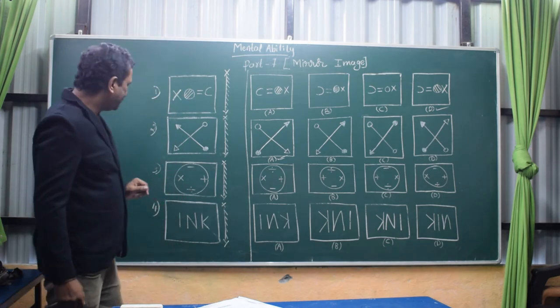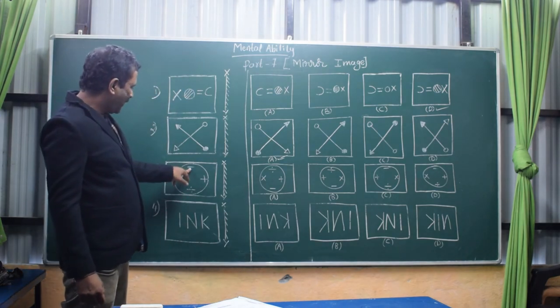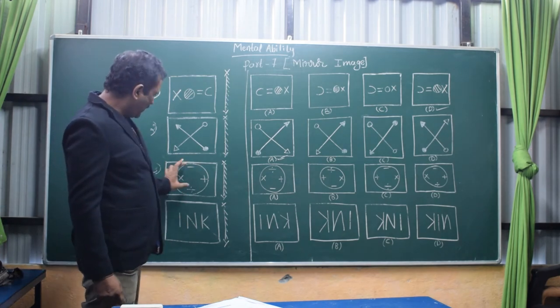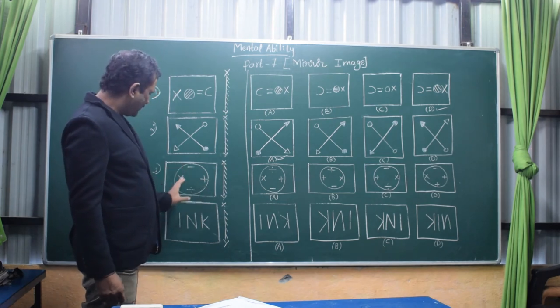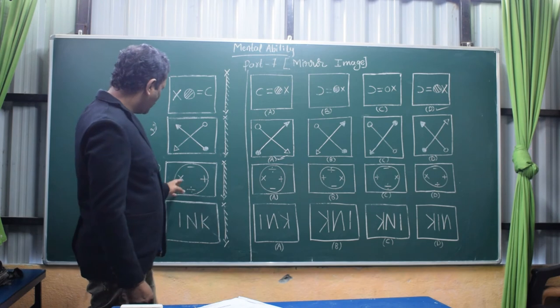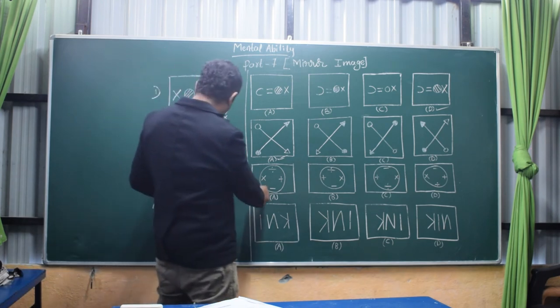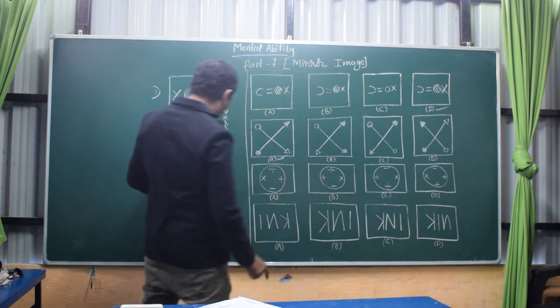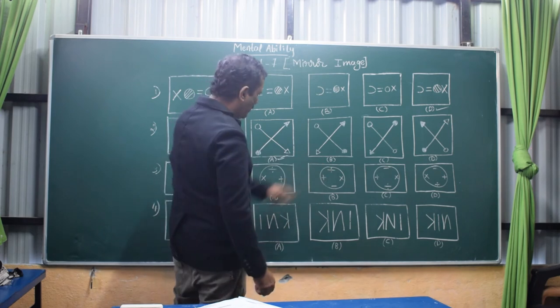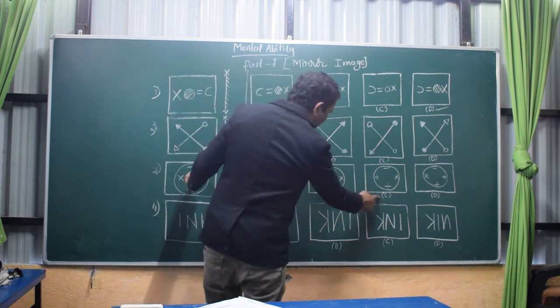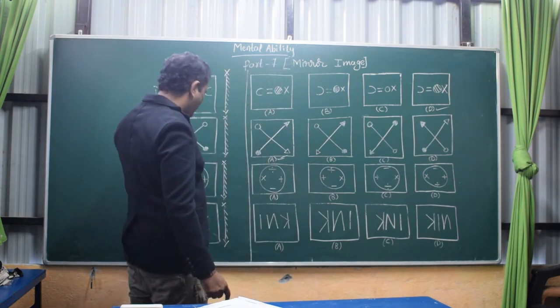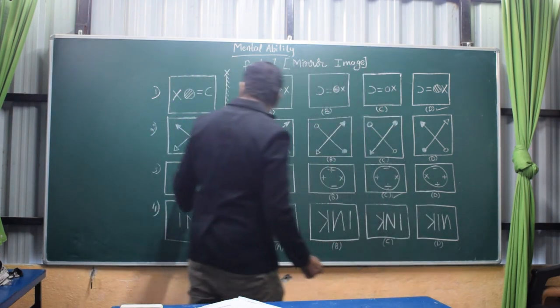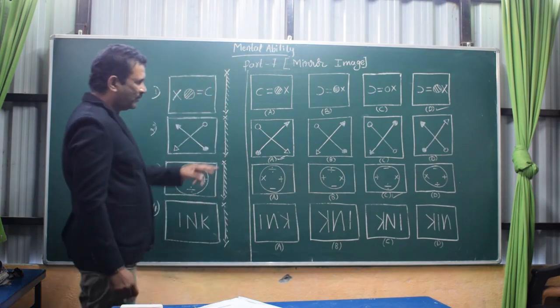Come to question number three. Here one circle is there with minus, plus, divided by, and multiplication symbols. If you see the mirror, these two cannot change. Only plus and multiplication will be inverted. In this option, the multiplication is in the same position, this is not the answer. Here plus and multiplication are inverted, but divided by is gone to top side, this is also not correct. Here in C, minus and divided by symbols are in same position, plus and multiplication inverted, that's why this is the answer. In D, multiplication and plus in the same position, that's not the answer.